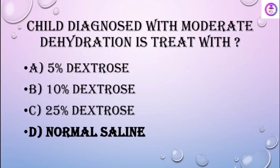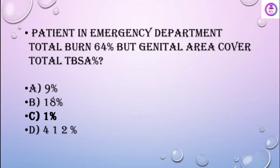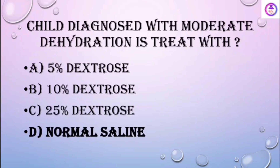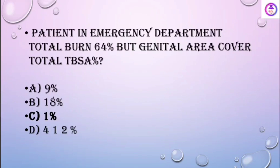A child diagnosed with moderate dehydration is treated with normal saline. A patient in the emergency department comes with a total burn of 64%, but the genital area covers 1% of total body surface area.